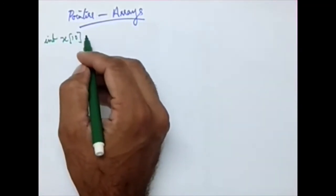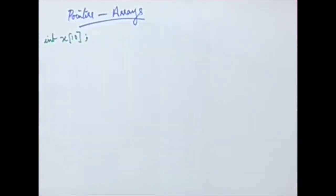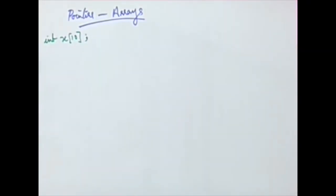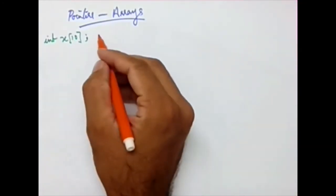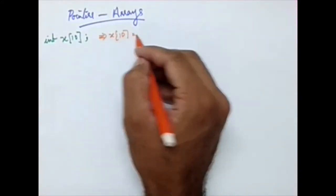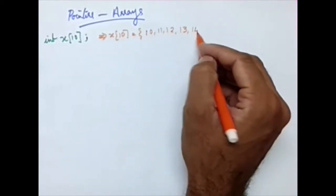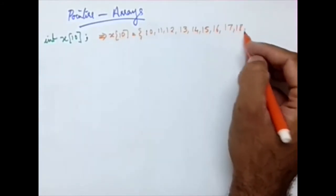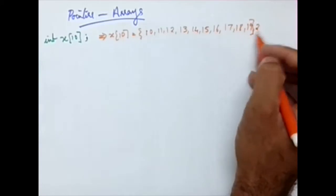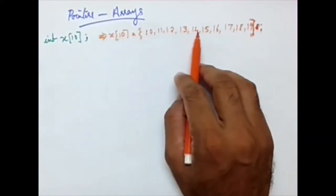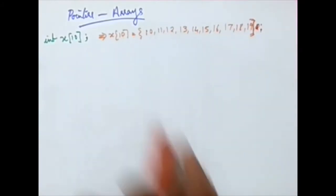If I define a statement like int x[10], it means that I am going to store 10 integer values inside the array x. So I am defining the different values — say x[10] = {10, 11, 12, 13, 14, 15, 16, 17, 18, 19}. I have defined 10 values: 1 through 10. Currently this array x is having 10 integers stored in it.